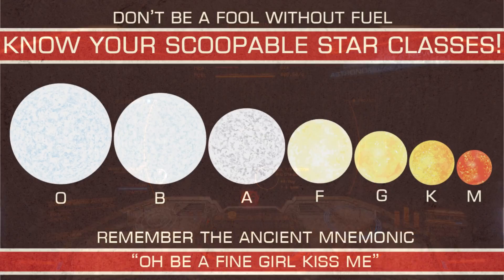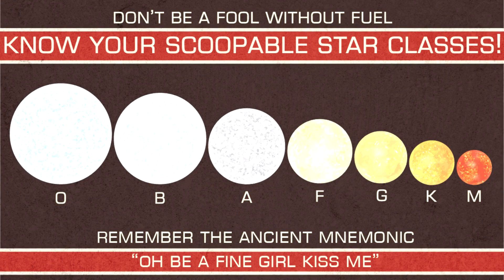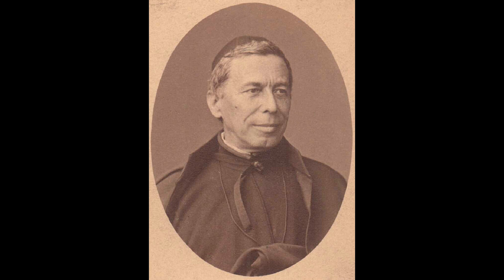Now, if you're an astronomer, you know the order better as OBAFGKM. And in either case, you might wonder why isn't this in a more sensible order? Why are these letters randomly chosen from the alphabet and not in any sane order? And to understand this, you actually have to go back into the history of stellar classification. The first example of spectral classification goes back to a guy called Angelo Secchi, who was a Jesuit astronomer in Rome.